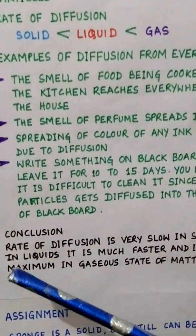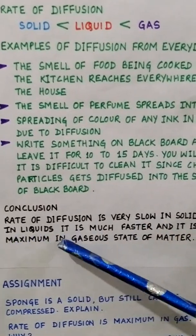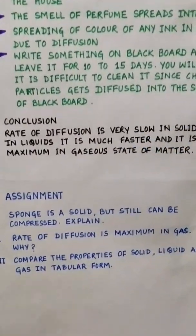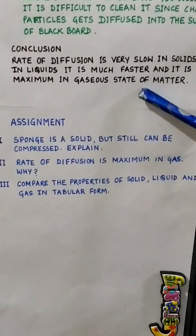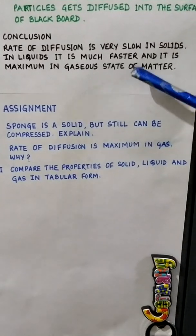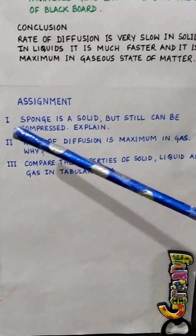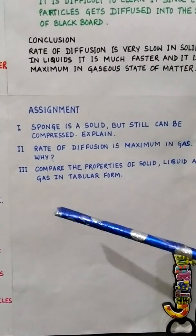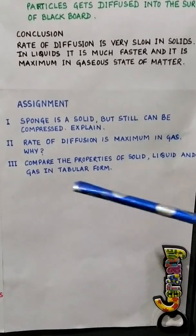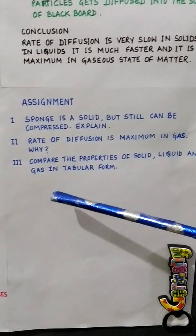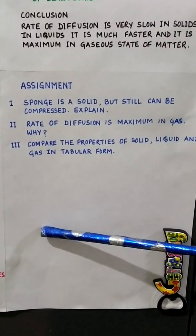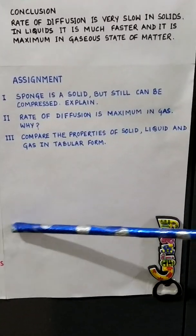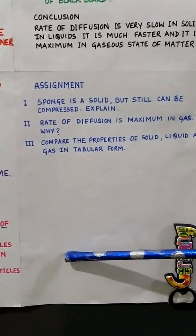The conclusion is that the rate of diffusion is very slow in solids, much faster in liquids, and maximum in gaseous state. I hope today's topics are clear to all of you. I will be giving you an assignment with three questions: first, sponge is a solid but can still be compressed — explain; second, why is the rate of diffusion maximum in gas; third, compare the properties of solid, liquid and gas in tabular form, with columns for inter-particle space, inter-particle force, shape and size, density, and rigidity.